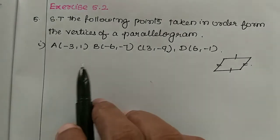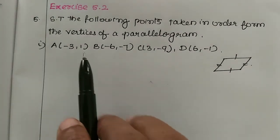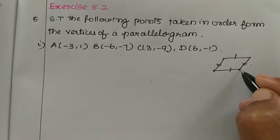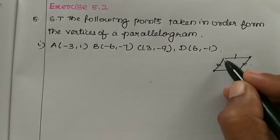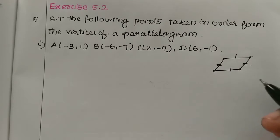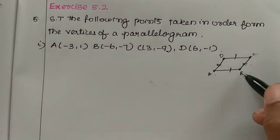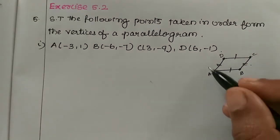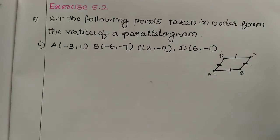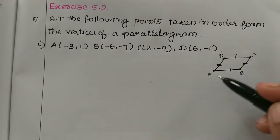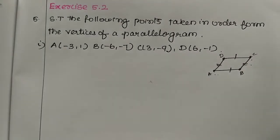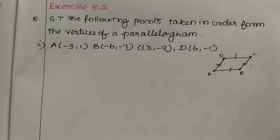A parallelogram has 4 vertices. The property of a parallelogram is that opposite sides are parallel and equal. So we have 4 sides: AB, BC, CD, DA. Opposite sides AB equals CD, and BC equals DA. These 4 vertices form a parallelogram.